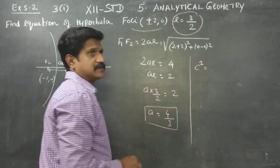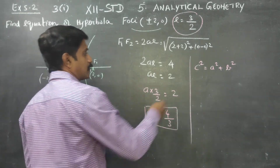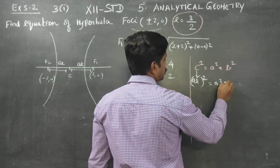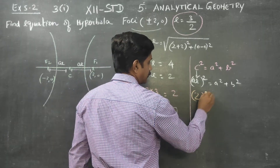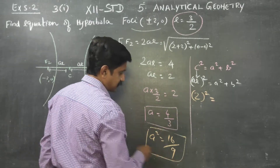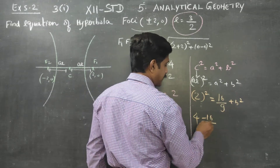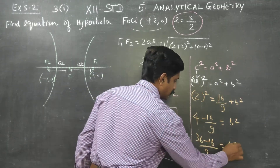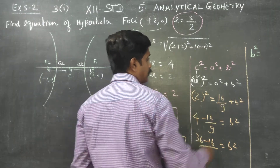We know that c squared is equal to a squared plus b squared. Here c equals ae equals 2, so c squared equals 4. Therefore, b squared equals c squared minus a squared, which is 4 minus 16 by 9, giving 36 minus 16 by 9, so b squared equals 20 by 9.